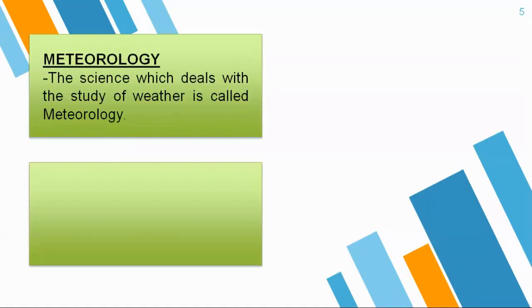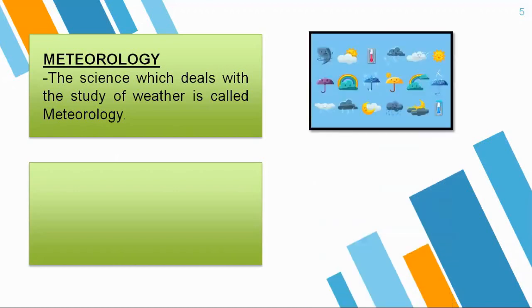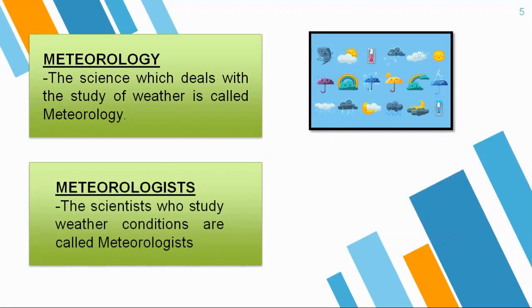The topic is meteorology. Meteorology is a science which deals with the study of weather. Just like biology deals with the study of life, same way meteorology deals with the study of weather. In weather we study about different weather aspects — about tornado, about cyclone, about rain, about sunny day and so on. The scientist who studies meteorology is known as a meteorologist — the scientist who studies weather is called your meteorologist.